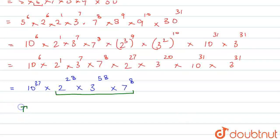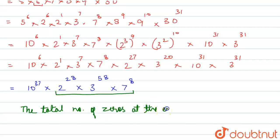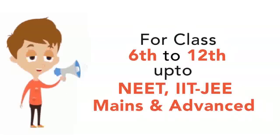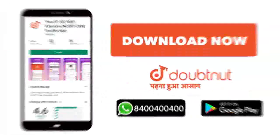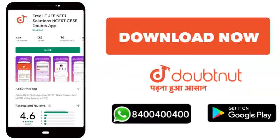So, therefore, we can say that the total number of zeros at the end equals — we have 10 to the power 37. We are multiplying this number by 10 to the power 37. Therefore, 37 zeros will come at the end. The answer is 37. 37 zeros will come at the end. Thank you, students.